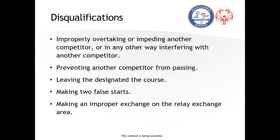For the 4x100: since it's half a loop, exchange zones will be on the far side opposite the start. There'll be two exchange zones — positions two and four — on the far side. For the 4x200, the exchange zone is just the one at the start line.